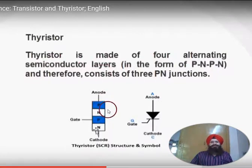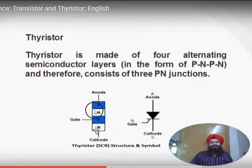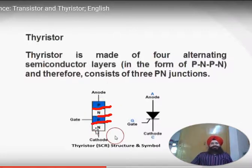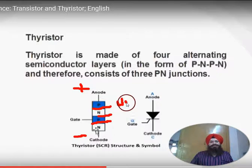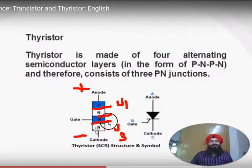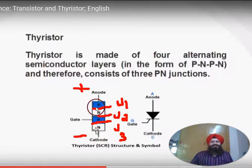The thyristor is made up of four layers, consisting of three PN junctions: first junction J1, second junction J2, and third junction J3. When giving positive potential at the anode and negative potential at the cathode, junction J1 comes to forward bias, J3 comes to forward bias, but J2 becomes reverse biased.